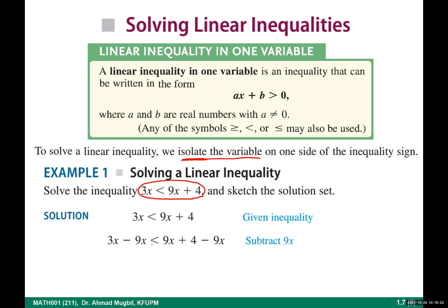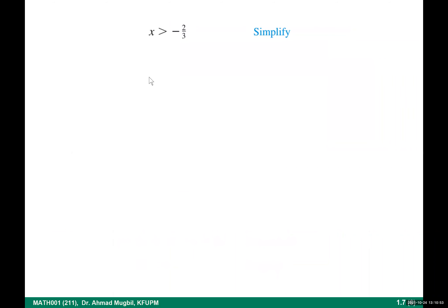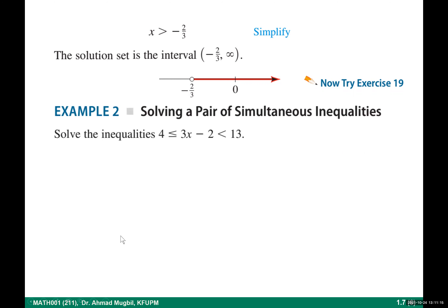On the left-hand side we will have negative 6x, and on the right, 4. Then we divide by negative 6 — or multiply by negative 1/6 — so we must reverse the inequality: less than becomes greater than. Simplifying, x is strictly greater than negative 2/3. The solution set is the interval: all real numbers greater than negative 2/3.